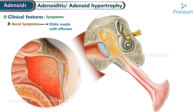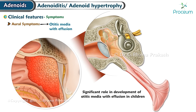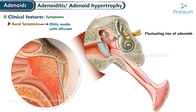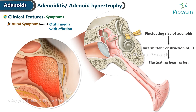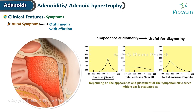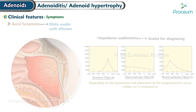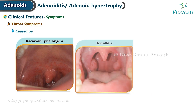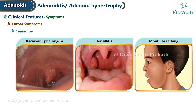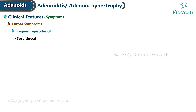Adenoids play a significant role in the development of otitis media with effusion in children. The fluctuating size of the adenoids can cause intermittent obstruction of the Eustachian tube, resulting in fluctuating hearing loss. Impedance audiometry is useful for diagnosing this condition.